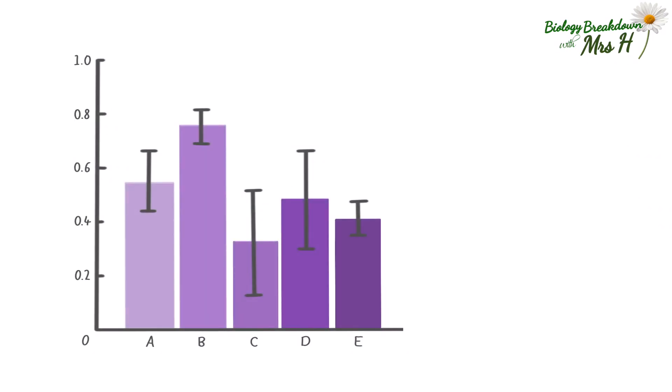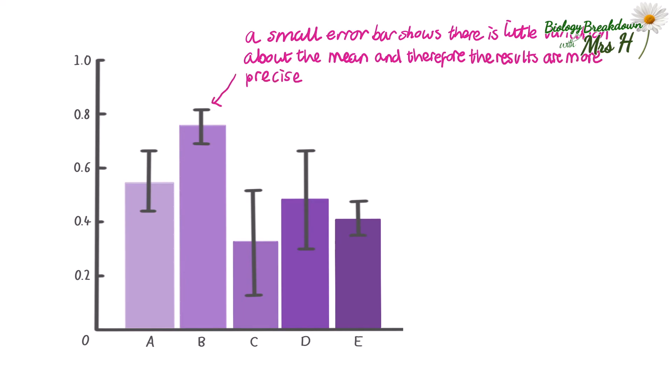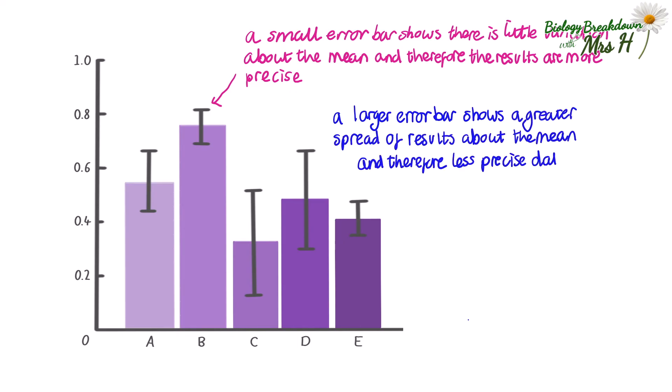Another interpretation you can make from the error bars is how precise the data is. If there is a little variation about the mean the error bar will be small and our results will be more precise than results with a larger error bar. A larger error bar shows a greater spread of results about the mean and therefore less precise data.